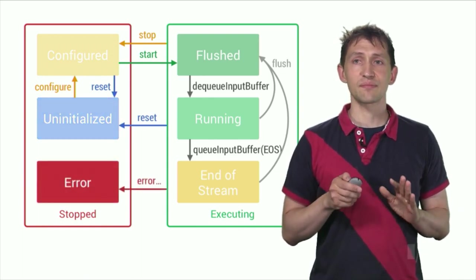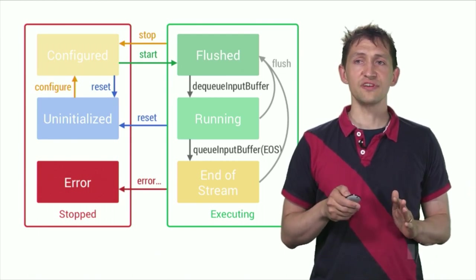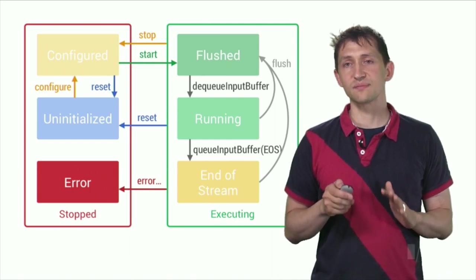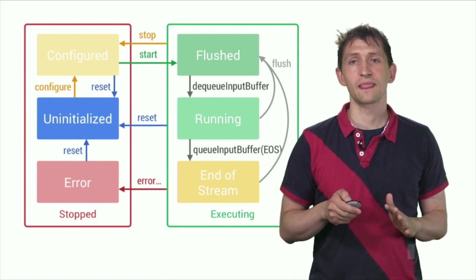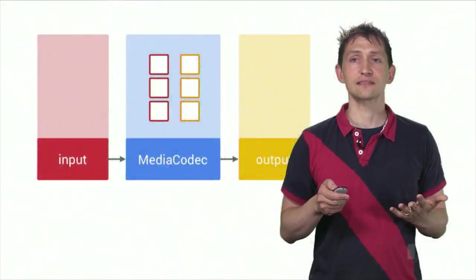If you call reset from any state, the codec moves back to the uninitialized state. On rare occasions, the codec may encounter an error and moves to the error state. This is communicated using an invalid return value from a queuing operation, or sometimes via an exception. Call reset to make the codec usable again. After you finish using a codec, you have to release it by calling release.